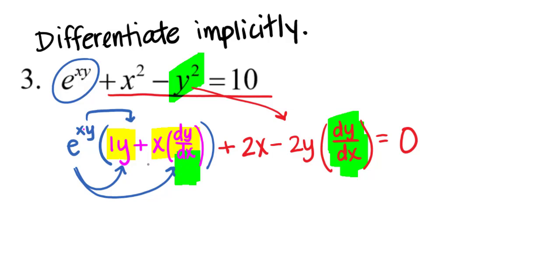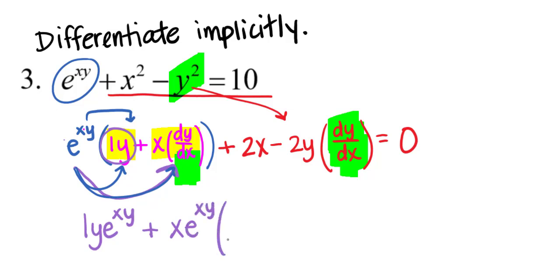After distributing, 1·y times e to the xy gives y·e^(xy), and continuing: x·e^(xy) is my dy/dx term. I don't personally recommend putting y prime because it's going to look like an exponent, which makes it hard to find and solve for and can cause errors — but you certainly can use y prime instead.